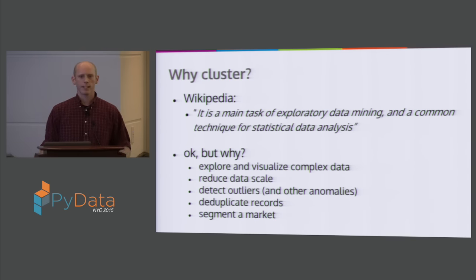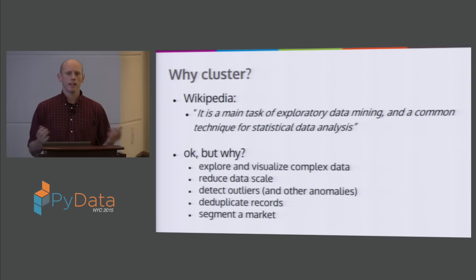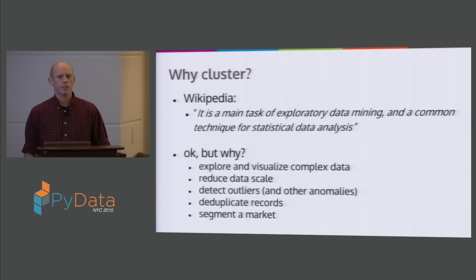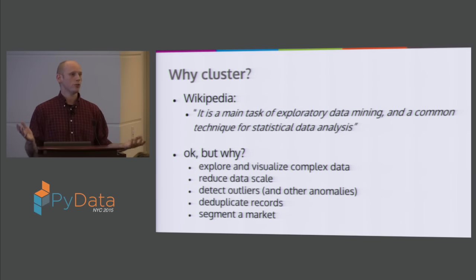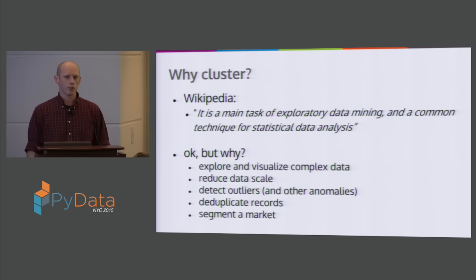Another use is to reduce the scale of the data, either reducing the number of instances or reducing dimensionality. A very common application with a lot of commercial use is detecting outliers — a flavor of anomaly detection. Small clusters with small mass but high density can also be considered anomalies. Deduplication is a fascinating clustering example because we often think of finding a small number of groups, but in deduplication you might want n minus two clusters. Finally, people often talk about clustering to segment a market or user base — sometimes people do clustering because they don't know what else to do to get started.